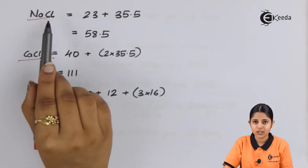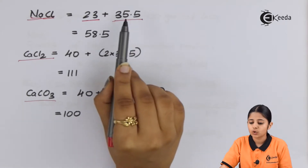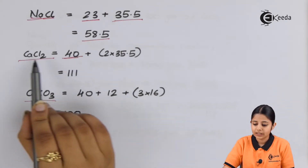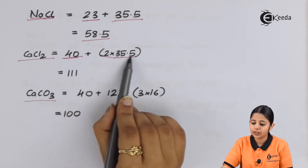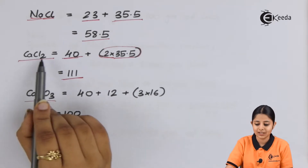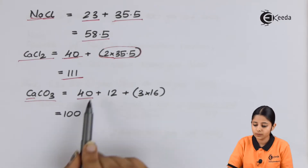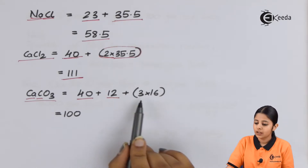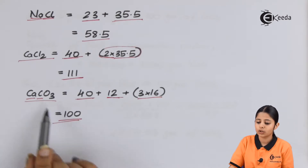The atomic weight of Na is 23 and Cl is 35.5, so the molecular weight of NaCl is 58.5. For CaCl₂: Ca is 40, Cl₂ is 2 × 35.5 = 71, so the molecular weight of CaCl₂ is 111. For CaCO₃: Ca is 40, C is 12, and 3 oxygens give 3 × 16 = 48; so 40 + 12 + 48 = 100. The molecular weight of CaCO₃ is 100.